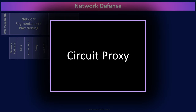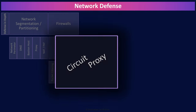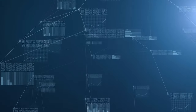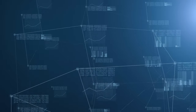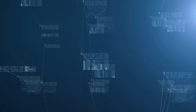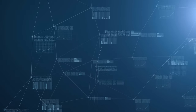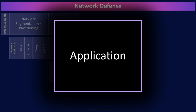Circuit proxy firewalls operate at layer five — the session layer. Circuit proxies understand what is happening at the session layer and will allow a circuit or session to be established if it complies with predefined rules. And all the way at the top of the OSI model, we have application firewalls, which operate at layer seven — the application layer. This means that application firewalls can do deep packet inspection — they can inspect anything in the packet header and reassemble a series of packets to inspect the contents of the data being sent. For instance, application firewalls can scan a file being sent to look for viruses. They are very intelligent but are the slowest type of firewall and cause the highest latency.